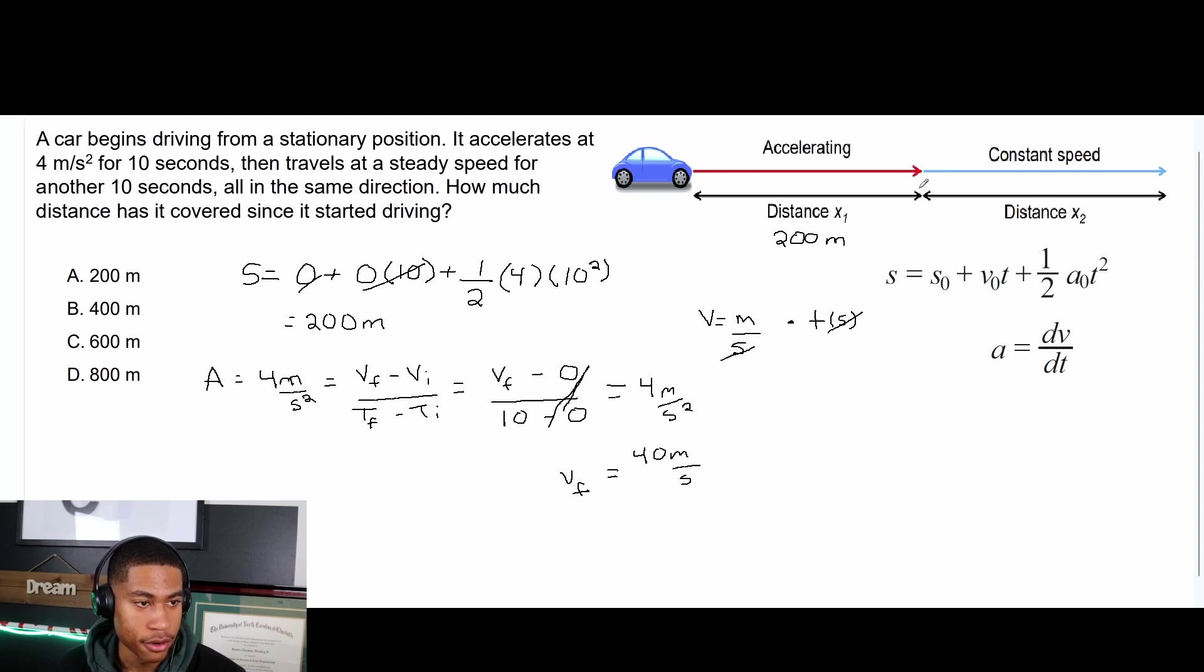So now if we know that that 40 meters per second stays the same, the constant speed, well 40 meters per second times how long does it do that? It goes for 10 seconds, which means that it goes for a distance of another 400 meters.